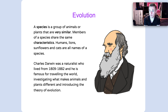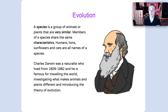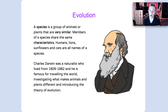So evolution — the theory of evolution was thought up by a man named Charles Darwin. What he said is that a species is a group of animals or plants that are very similar. Members of a species share common characteristics. All humans have two eyes, for example — that's a characteristic. All humans have two ears. Humans, lions, sunflowers and cats are all names of different species. He was a naturalist who lived in the 1800s and he is famous for travelling the world and studying what makes animals and plants different, and he introduced the theory of evolution.